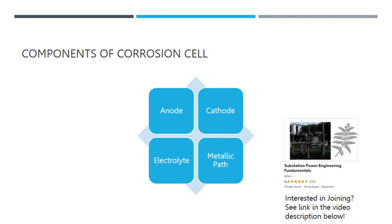Depending on its electrical potential in relation to the other electrode, an electrode in an electrochemical corrosion cell either becomes an anode or a cathode. The electromotive force of the cell is represented by this electropotential difference, which is the voltage difference between the anode and the cathode. By definition, the anode is the electrode that experiences corrosion because it is more electrically active or more negatively charged, while the cathode is more noble and does not corrode.